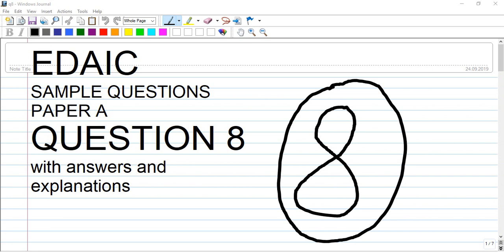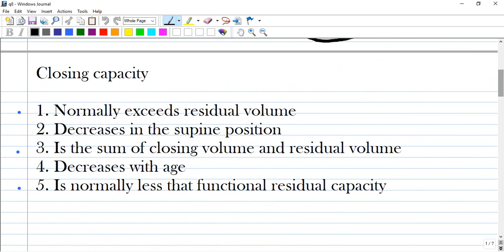Hi guys, we have EDAIC sample questions and it is paper A question number 8. It's about closing capacity and you have the following options: Normally exceeds residual volume. It is correct.